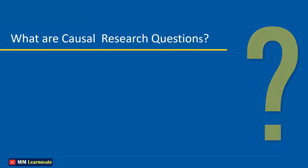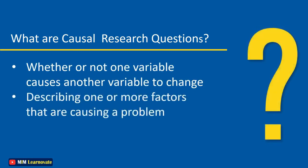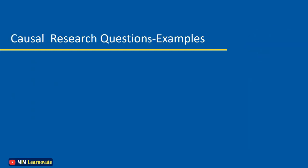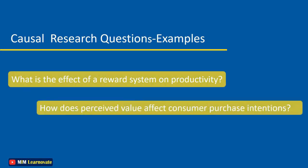Causal studies test whether or not one variable causes another variable to change. In a causal study, the researcher is interested in describing one or more factors that are causing a problem. Typical examples of causal research questions are: What is the effect of a reward system on productivity? How does perceived value affect consumer purchase intentions?